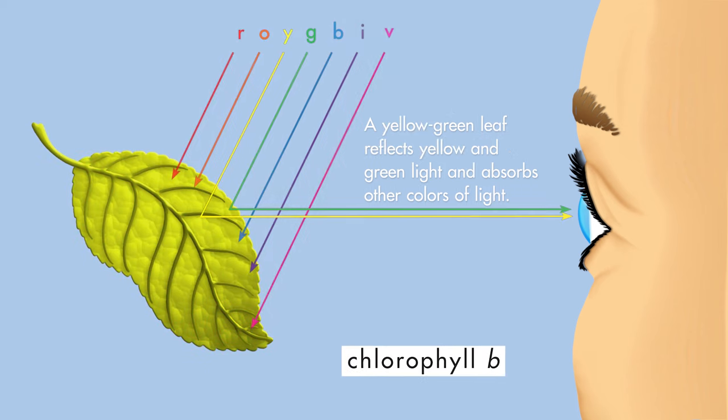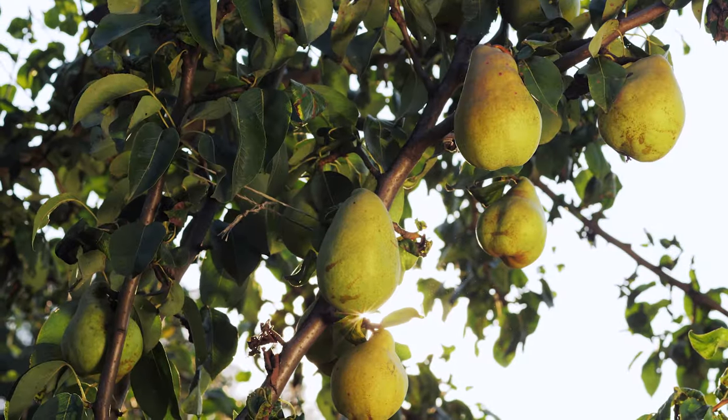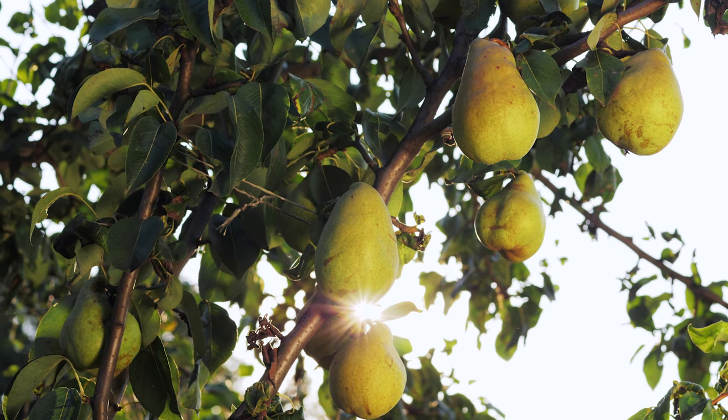Chlorophyll B reflects yellow-green light, but absorbs other colors. Chlorophyll B makes a pear appear yellow-green.